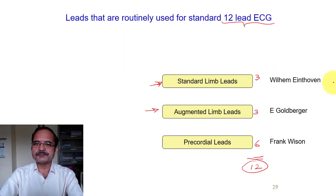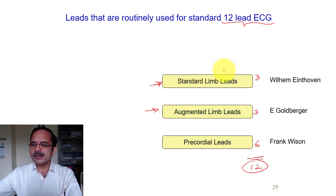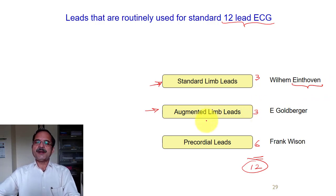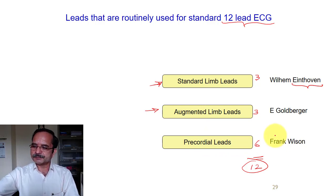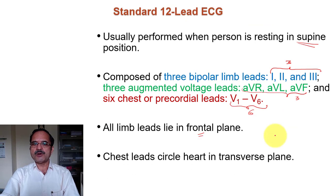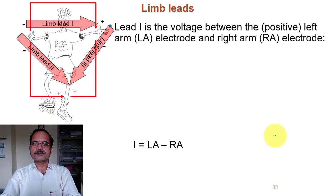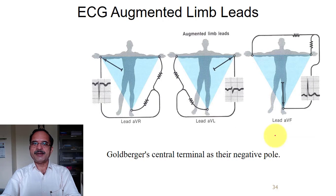There are three systems. What I just revised is the standard limb leads, consisting of three leads. As we have seen, there is one triangle called the Einthoven triangle. There are also three augmented leads and six precordial leads, all discussed in the previous lecture. In total, this forms 12 leads. The augmented leads are AVR, AVL, and AVF.